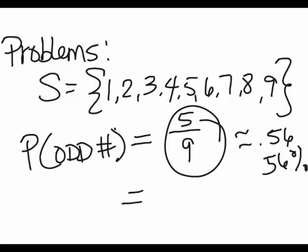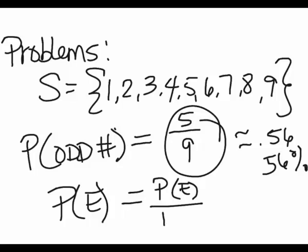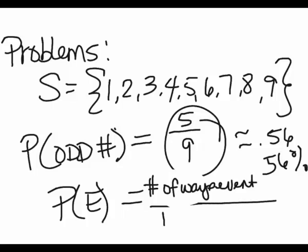So when you list your answer dealing with theoretical probability, it's going to be probability of an event equals the number of ways the event can take place divided by the number of terms in the sample space.